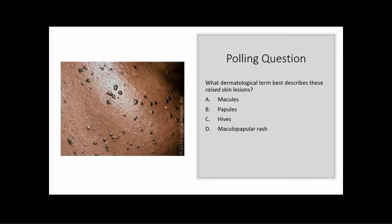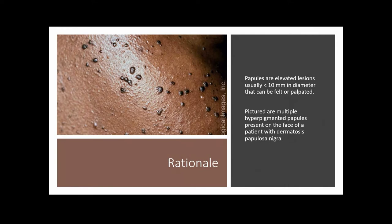Another polling question: what dermatological term best describes these raised skin lesions? The keyword is 'raised.' Is it A — macules, B — papules, C — hives, or D — maculopapular rash? Seeing a lot of B's coming in, and you guys are absolutely right. Papules are the elevated lesions, usually less than one centimeter in diameter, and they can be felt or palpated. Pictured here are multiple hyperpigmented papules present on the face of a patient with dermatosis papulosa nigra.